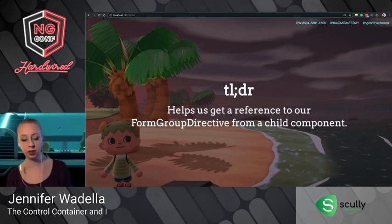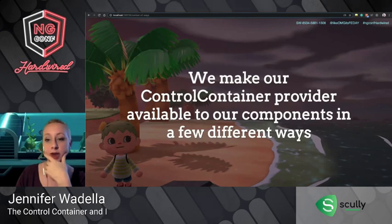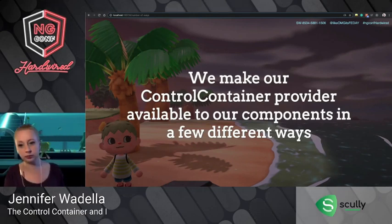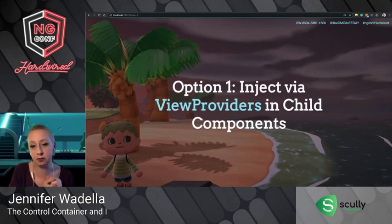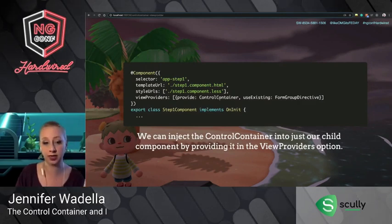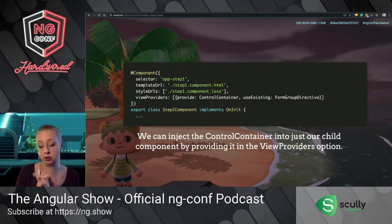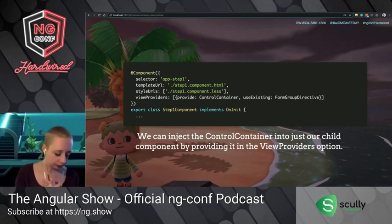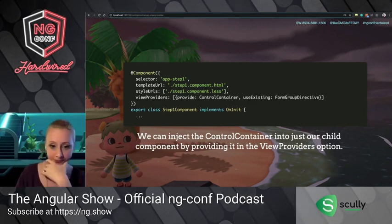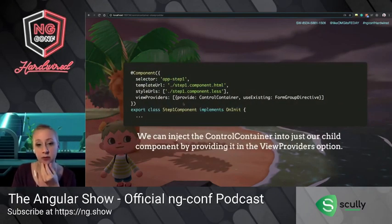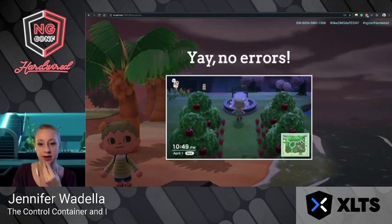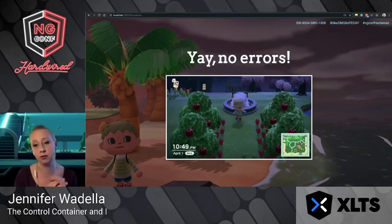We can handle this in a couple of different ways. Option one: inject the ControlContainer in the viewProviders array inside our child component. In viewProviders, we provide ControlContainer and say we want to use the existing FormGroupDirective. The viewProviders will make the ControlContainer available just to that component — it walks up the tree, finds our FormGroupDirective, and allows us to access it. We don't have to change any of our HTML with FormControlNames — it just works, no errors.